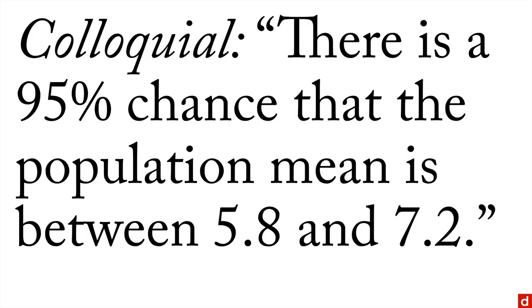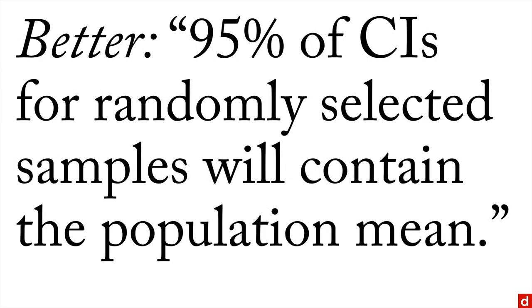In most statistical procedures, specifically frequentist as opposed to Bayesian, you can't do that. That implies that the population mean shifts. That's not usually how people see it. Instead, a better interpretation is this: 95% of confidence intervals for randomly selected samples will contain the population mean.